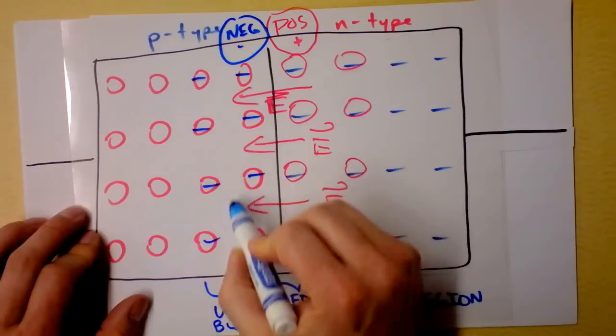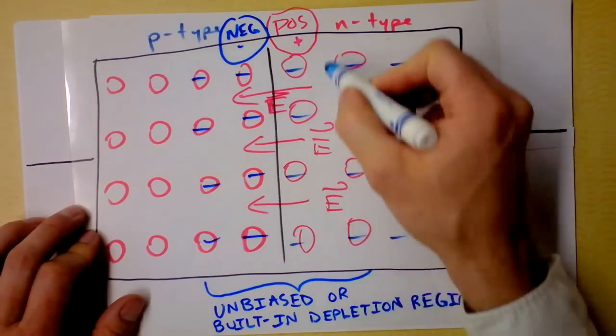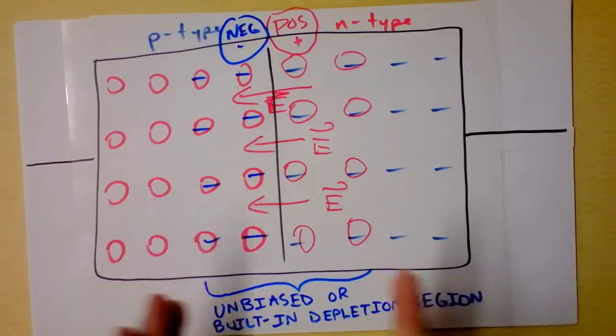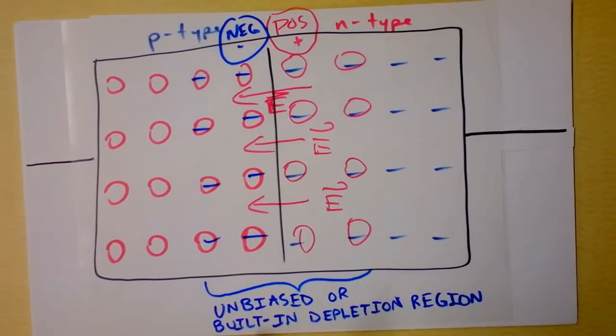So this is excess negative charge here and excess positive charge over here, which has created an electric field pointing to the left. And that's a characteristic of the built-in depletion region of a diode.